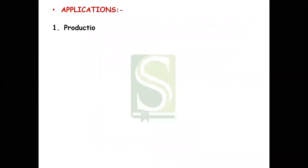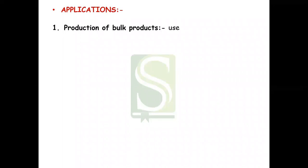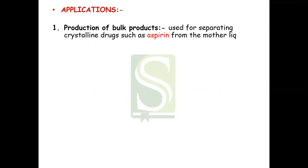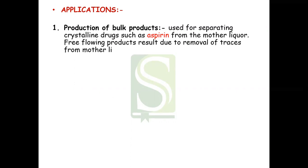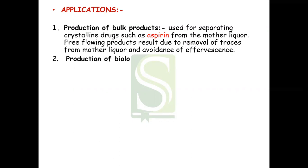Centrifugation is used for production of bulk products. It is used for separating crystalline drugs, mainly such as aspirin, from the mother liquor. Because of this, we get a free-flowing product. Centrifugation allows us to remove traces of the mother liquor and avoid effervescence.